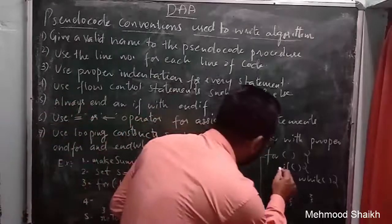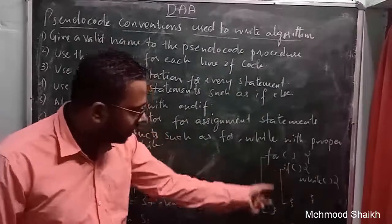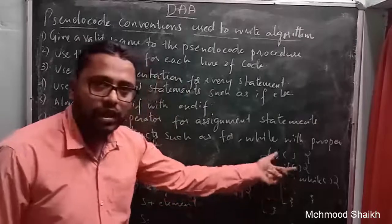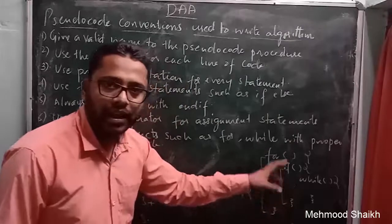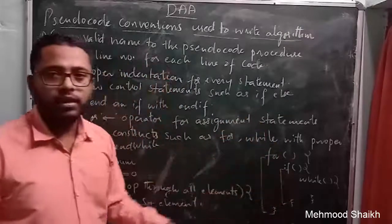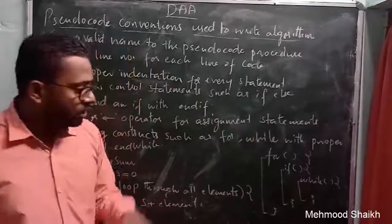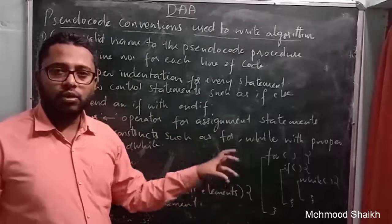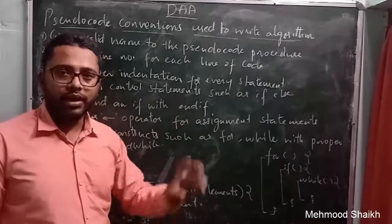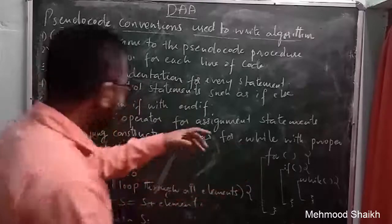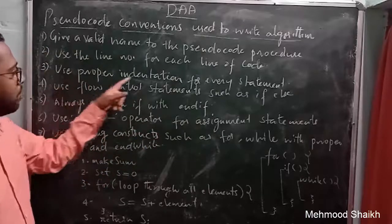So now in this code you can clearly see this for loop has started here and ends here. The if has started and ended here, and inside the if we have a while loop. With the help of this indentation you can clearly see where your if has started, where it has ended, and how much code is written inside the if block. This way of writing code helps you read, understand, and find errors in the code.